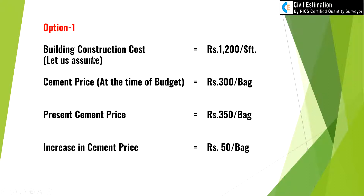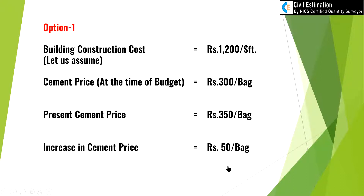Option 1: Let us assume building construction cost will be 1200 rupees per SFD at the time of budget rates and specification. At that time, cement price was 300 rupees per bag. Due to various reasons, construction of the building was delayed by 6 months. After 6 months, cement price increased to 350 rupees per bag — an increase of 50 rupees per bag. What will be the effect on the initial budget cost of 1200 rupees per SFD?